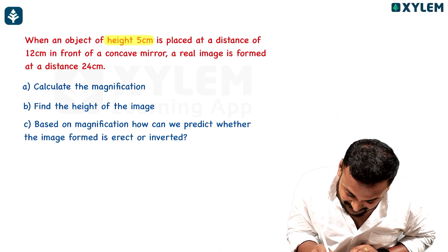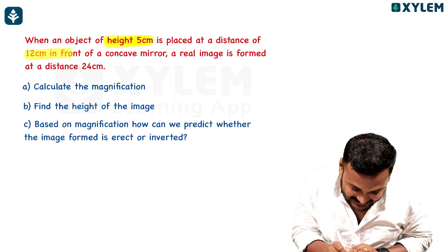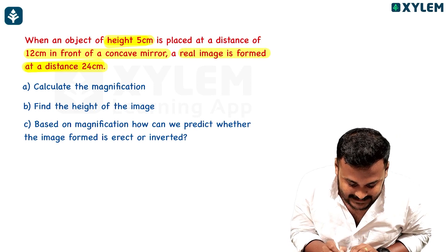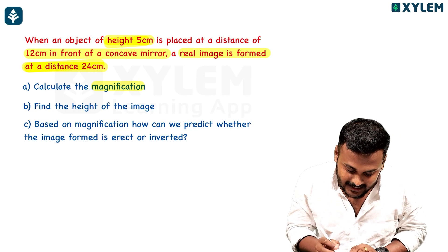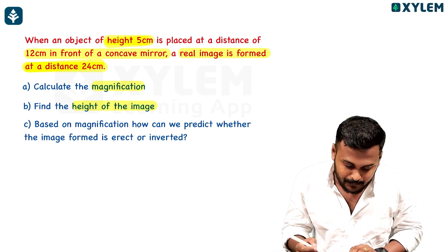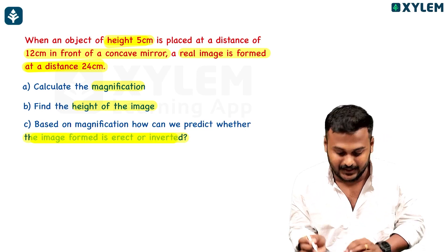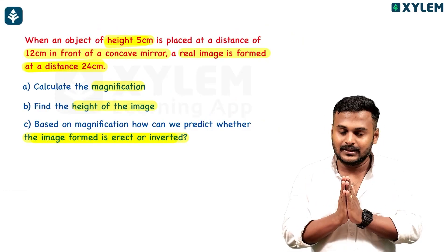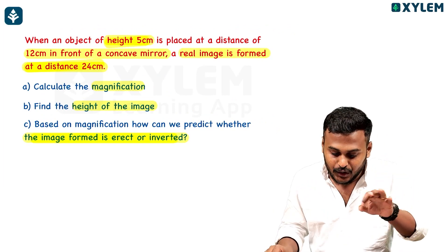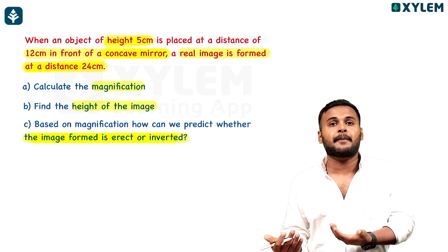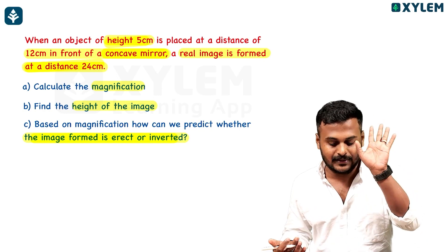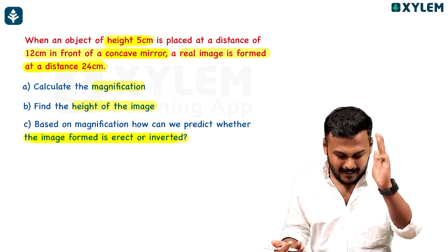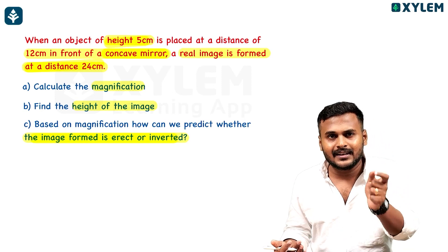An object of height 5 cm is placed at a distance of 12 cm in front of a concave mirror. A real image is formed at a distance of 24 cm. Calculate the magnification, find the height of the image, and based on the magnification, predict whether the image formed is erect or inverted. This is from the chapter reflection of light.